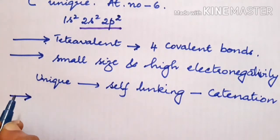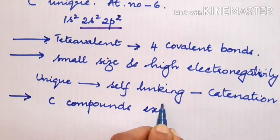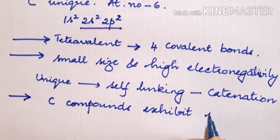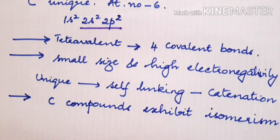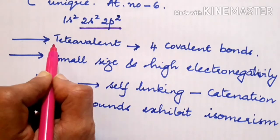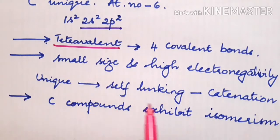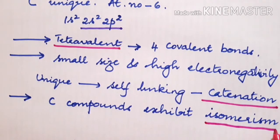The next point is carbon compounds exhibit isomerism. What do you understand by isomerism? Compounds with the same molecular formula can exhibit different structural formulas. So, the main reason why carbon compounds are learned separately is due to the occurrence of more number of compounds of carbon due to its tetravalent nature, due to its self-linking property called catenation, and its property of isomerism.